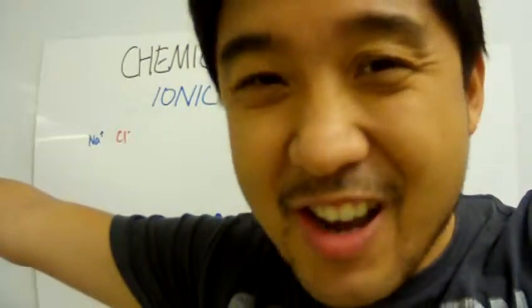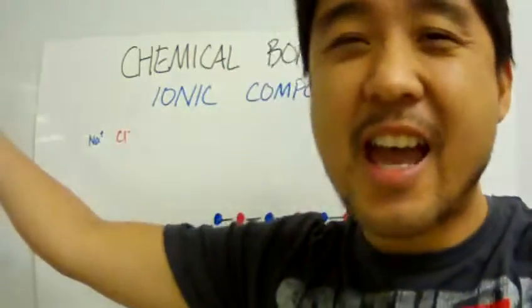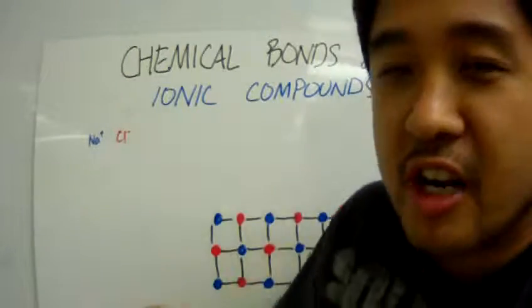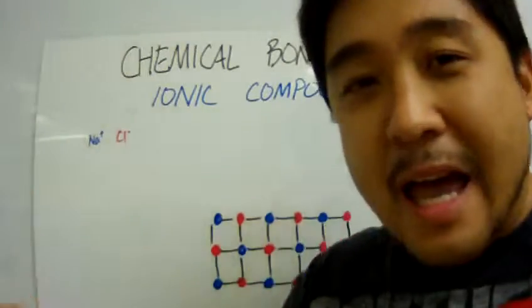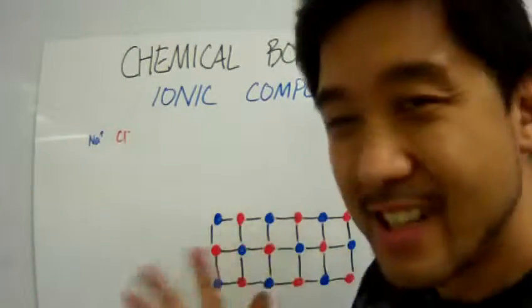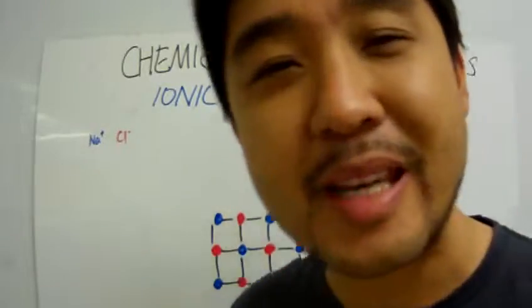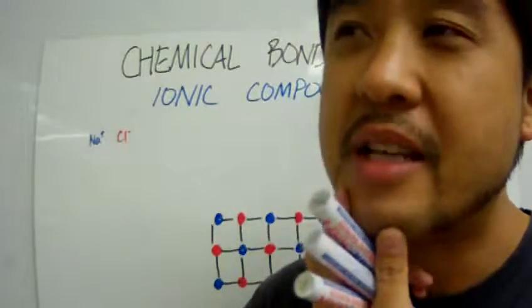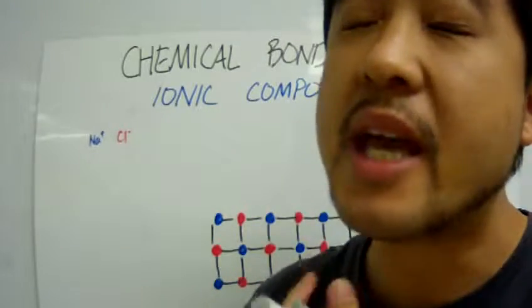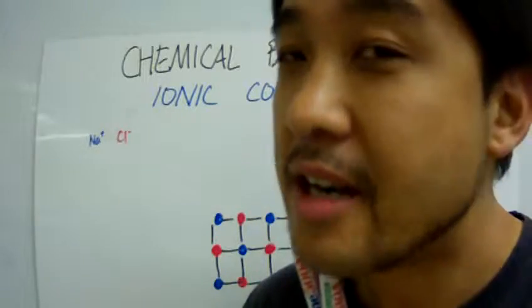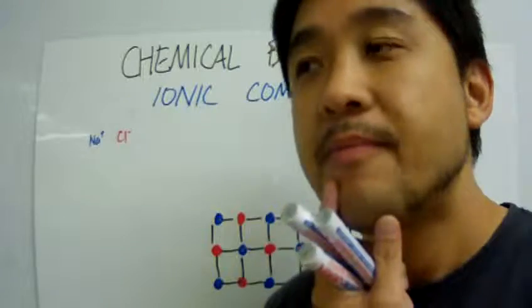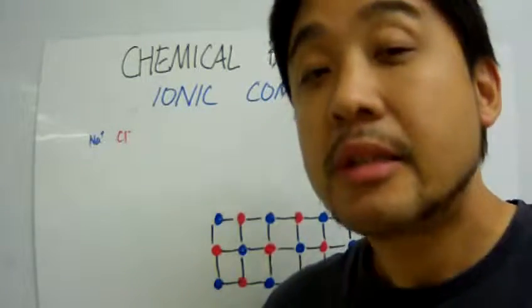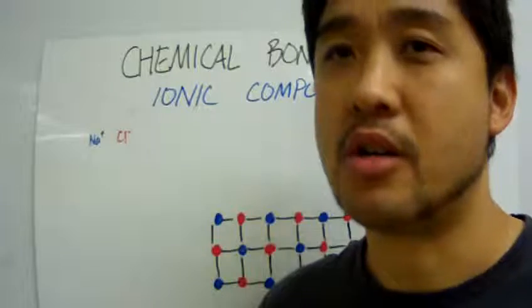We're going to talk about ionic compounds again and how ionic bonds form lattice structures. But before we begin, have you ever contemplated why we can see some chemicals and not others? For example, we can see salt, but we can't see oxygen.